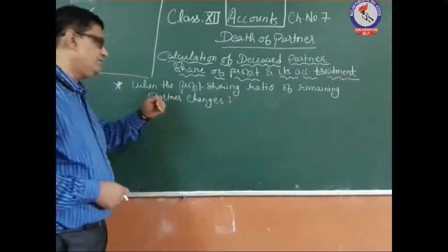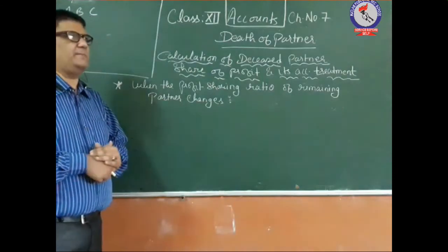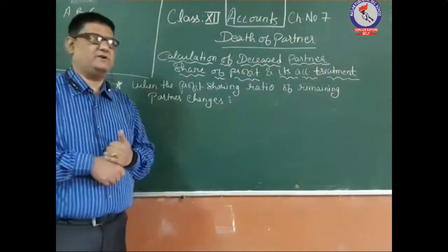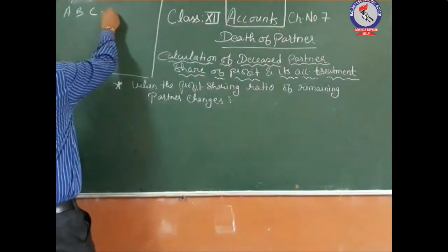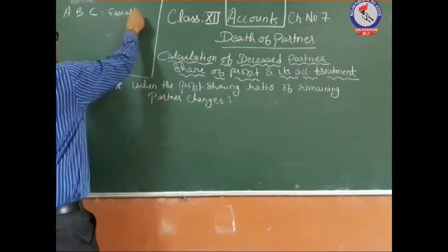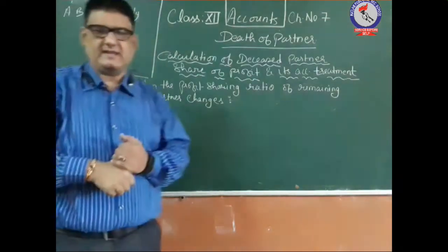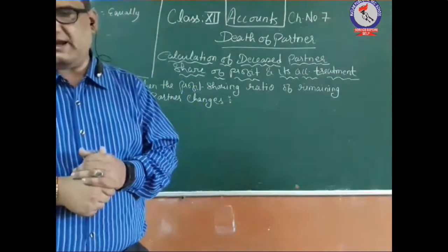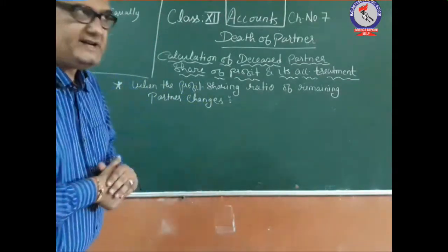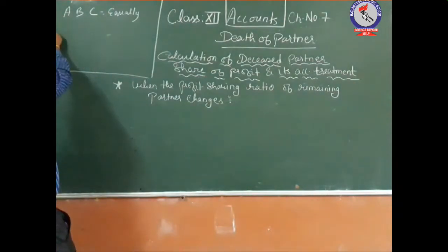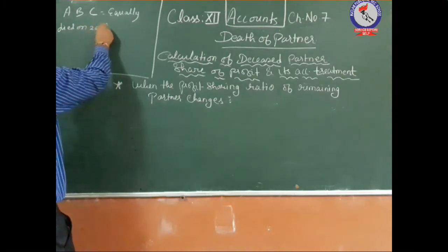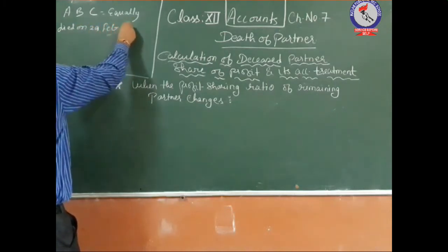We have taken one example here. There were three partners A, B, and C who were sharing profits and losses equally. C died on 29th February 2020.